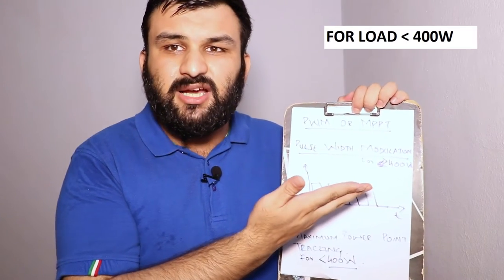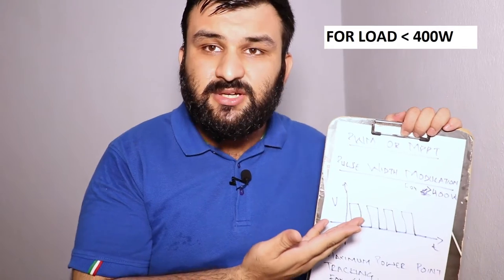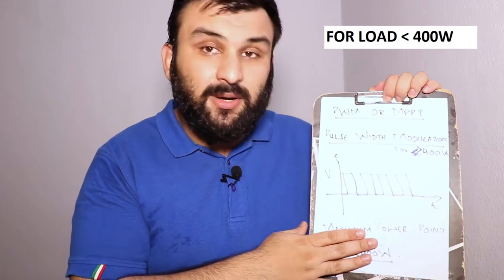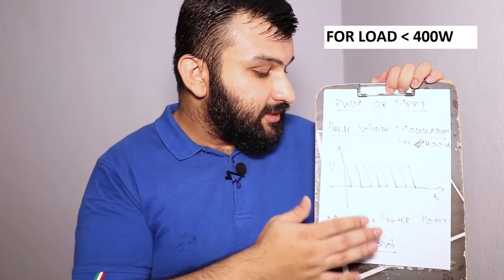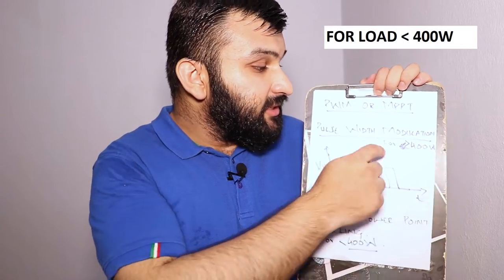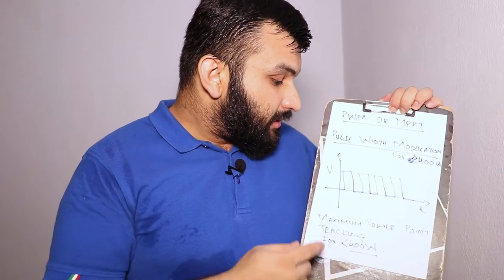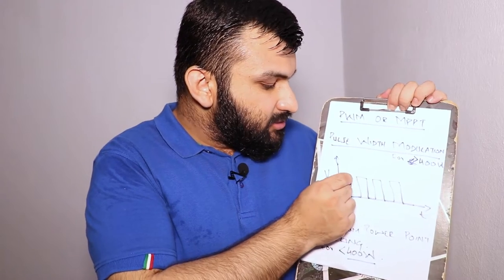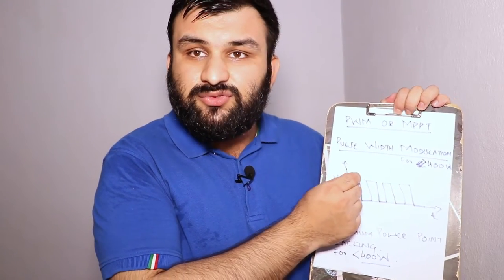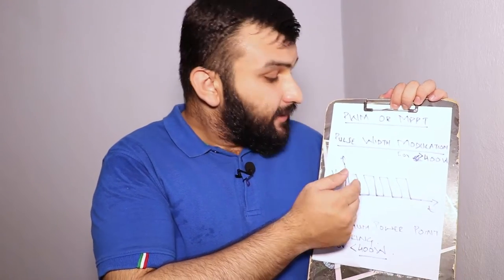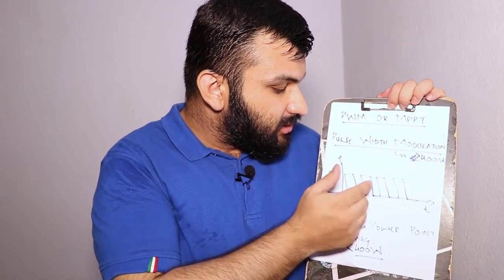PWM is used for systems below 400 watts because it is comparatively cheaper than MPPT. The pulse width changes and the average voltage decreases or increases depending upon the pulse width.